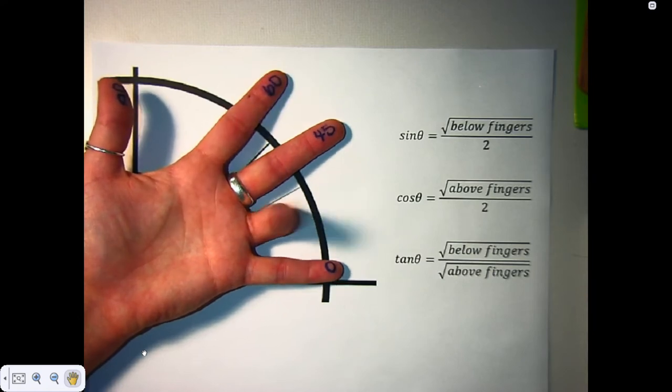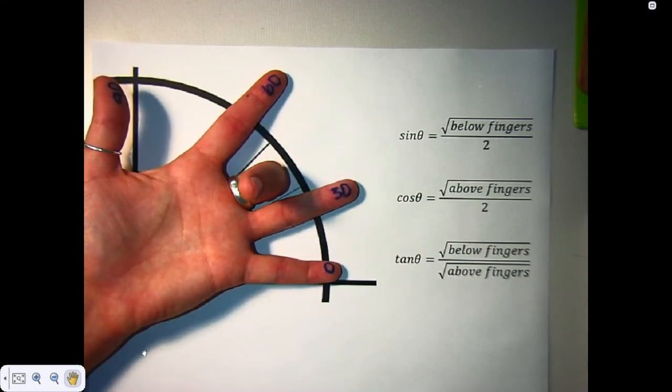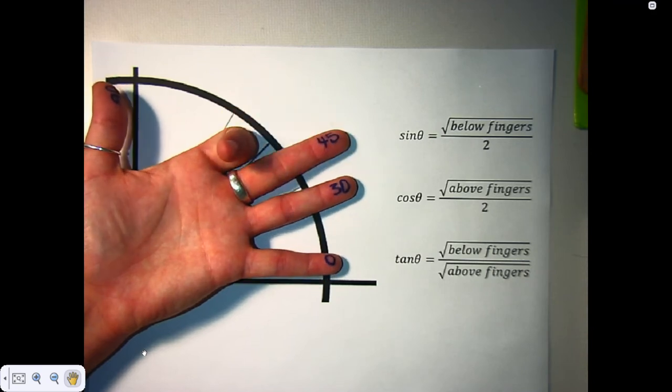So sine of 30, 1 over 2, square root of 2 over 2, square root of 3 over 2.